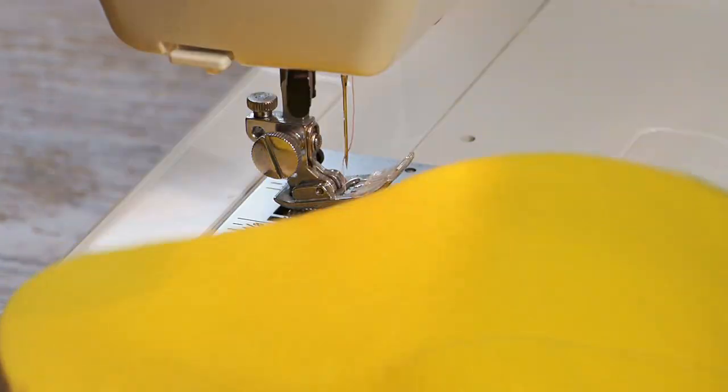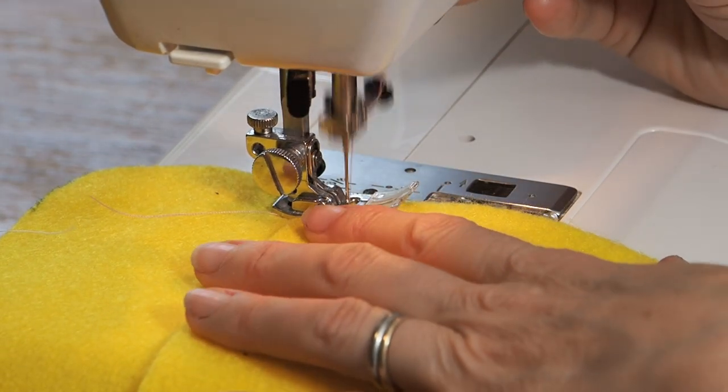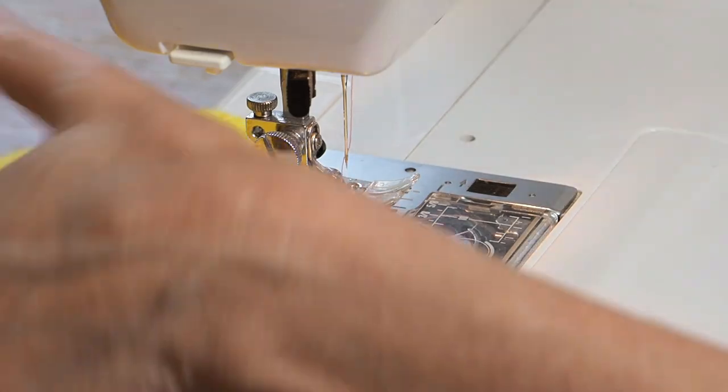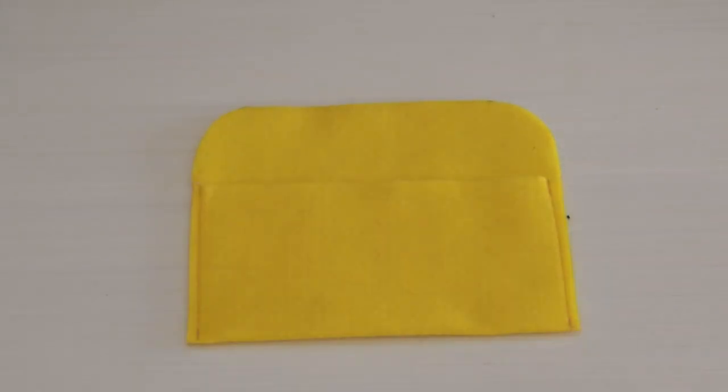We're not going to stitch on that top flap and then we'll stitch down the other side starting where that flap begins. Stitch down to the bottom and then our pouch is basically finished except for putting a little bit of velcro so we have a clasp.